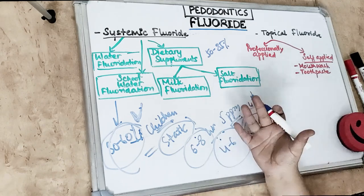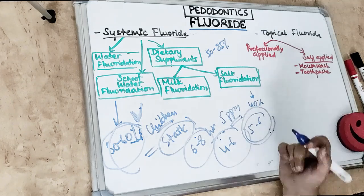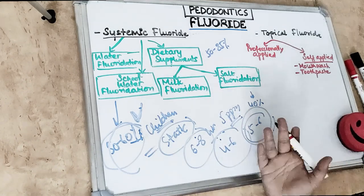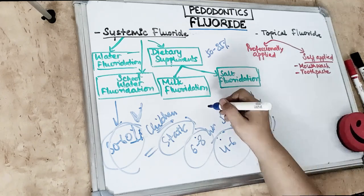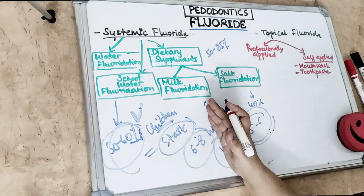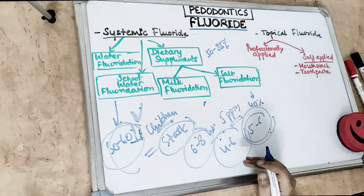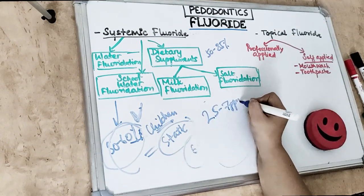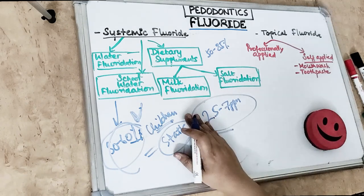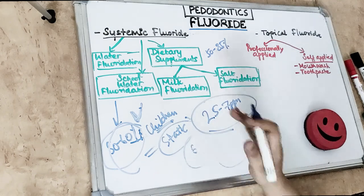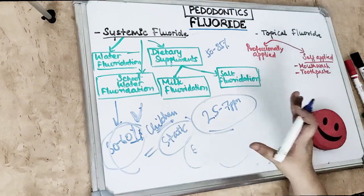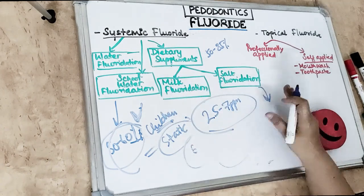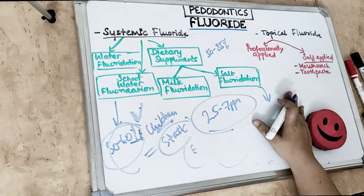Dietary supplements through which fluoride can be administered include fluoridated milk, fluoridated salt, fluoride in citrus beverages, drops, vitamins, lozenges, and tablets. Milk fluoridation is an alternative to water fluoridation for preventing caries; the recommended dose is 2.5 to 7 ppm of fluoride in milk. However, milk is not an ideal vehicle for fluoride delivery, as the absorption of fluoride is slower in milk compared to water.